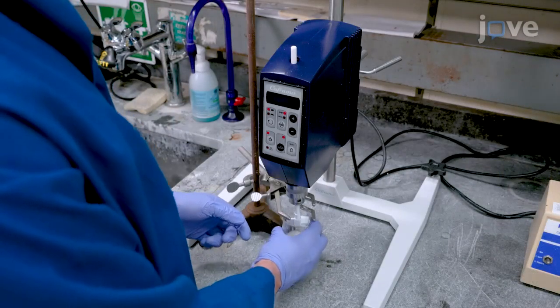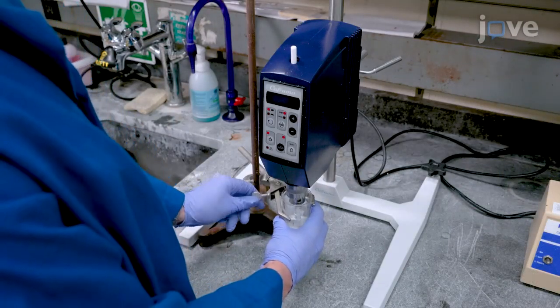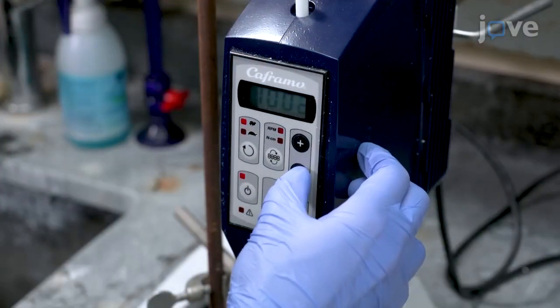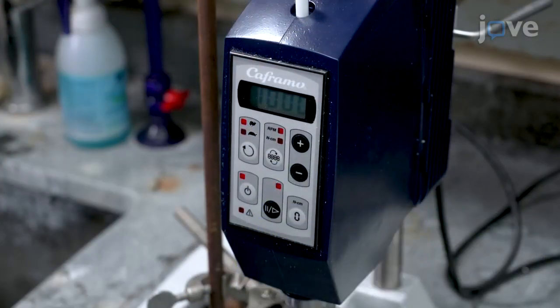Keep the beaker on an overhead paddle stirrer equipped with a plastic paddle and stir the entire mixture at 1,000 RPM for 5 minutes.